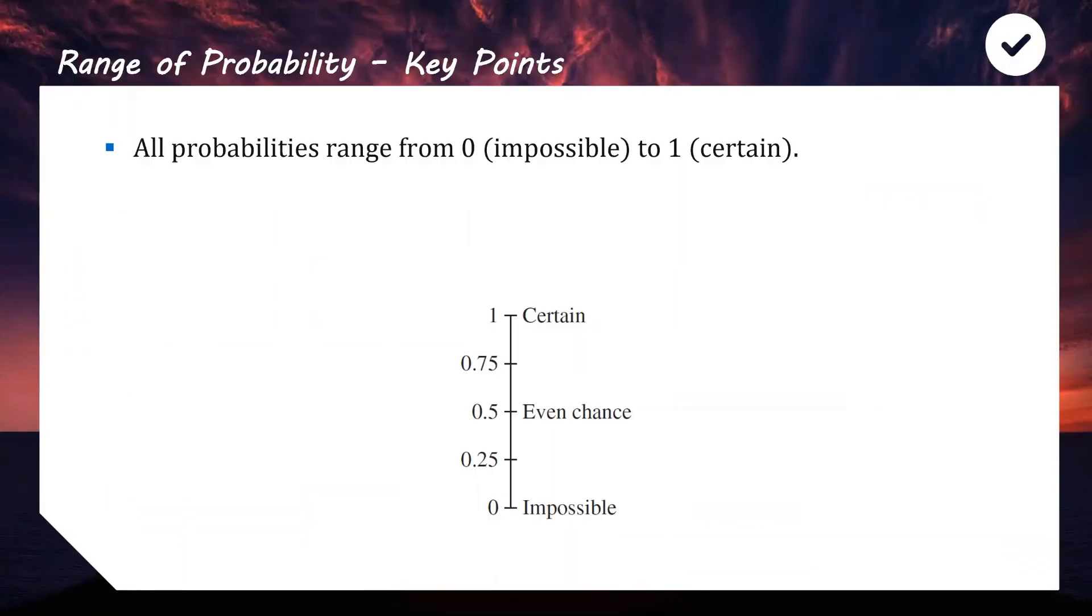All probabilities are always going to range from 0, which represents impossible, to 1 being certain. Whenever you calculate a probability in this topic, if you get an answer that's not between 0 and 1, you've probably done something incorrect. It's a spectrum of probability from 0 to 1, which is why we're always using fractions or decimals or percentages.